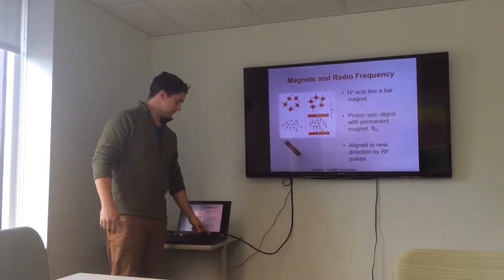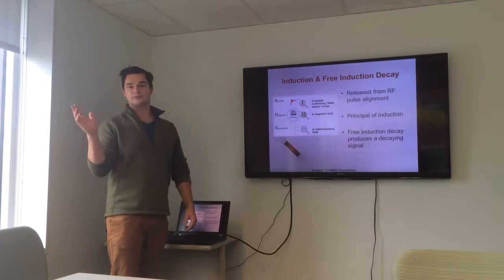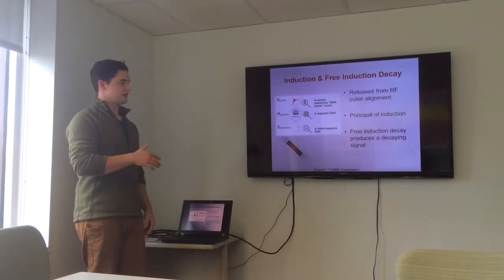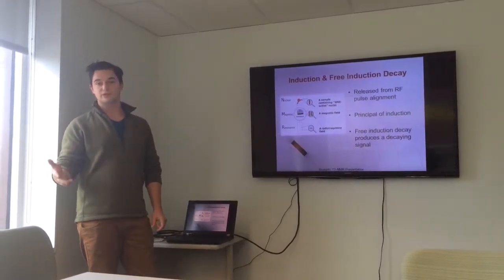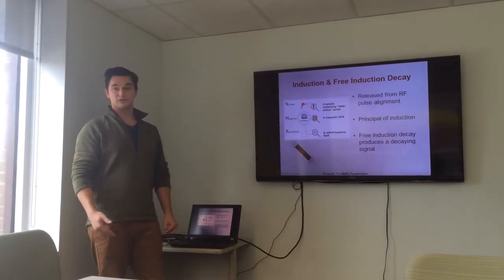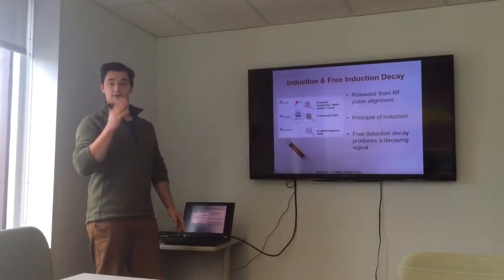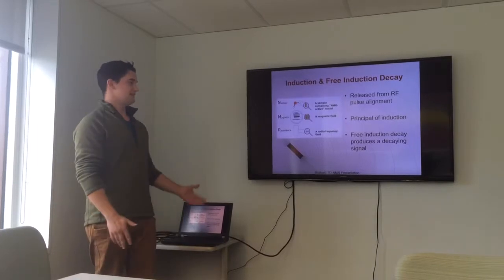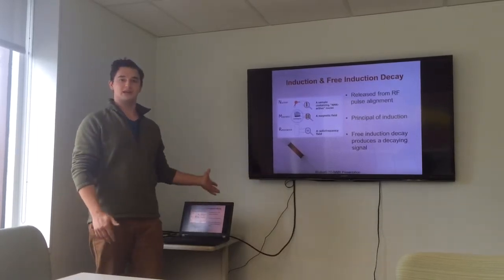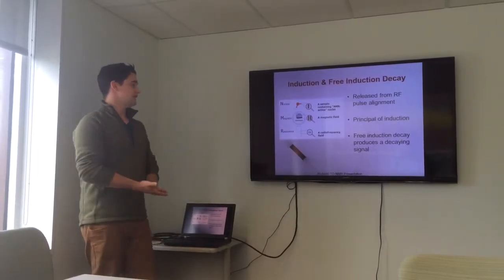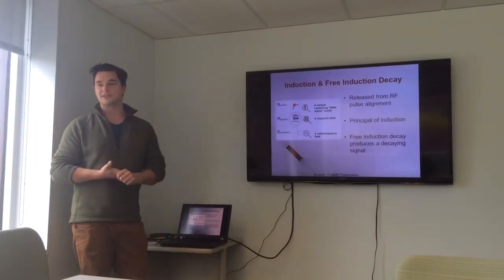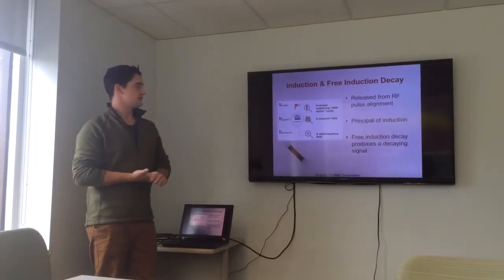And as you let go of the RF pulses, it returns to B0. That return is a changing magnetic field and it induces a current in the wire. That current is what we read as a signal. Because when it's fully aligned with B0, there is no signal. It's a decaying signal from its alignment to B0. That's why our signal is called free induction decay and also explains why it's called NMR.